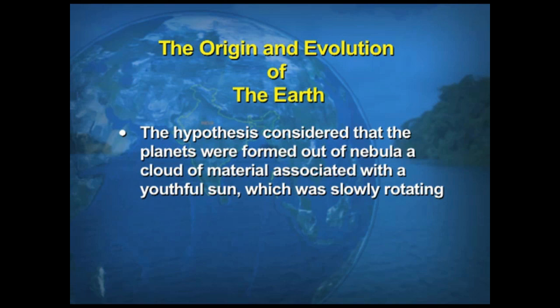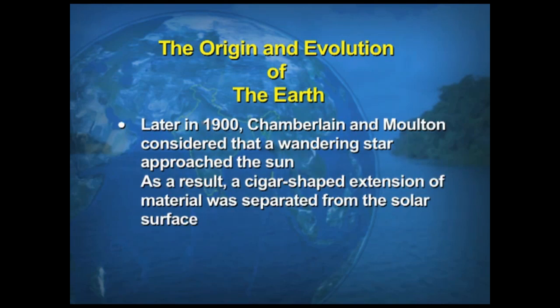The earliest theories considered about the origin of the Earth is the nebular hypothesis. This hypothesis was postulated by Immanuel Kant and was later revised by Laplace in 1796. This hypothesis considers that the planets were formed out of a nebula — a cloud of materials associated with a youthful sun which was slowly rotating. Later, Chamberlain and Malton also considered that a wandering star approached the sun.